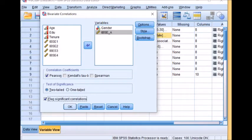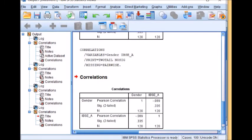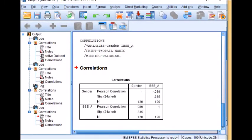Here is the SPSS result output. In the correlation matrix, you can see that for the sample data of 120 observations, the correlation between gender and IBSC is negative 0.089 and it is insignificant. Therefore, you will conclude that there is no point biserial correlation between gender and IBSC.